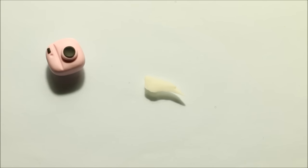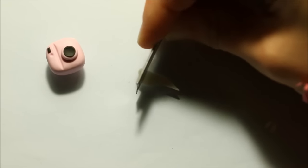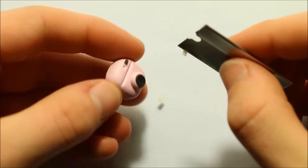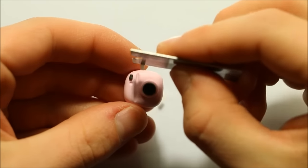To create the flash, this time flatten out some translucent clay, cut out a rectangle and then attach it up near the top. If you don't have translucent clay, you could also use white clay or any other color you like.